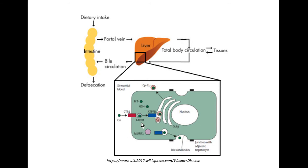Inside hepatocytes, copper binds ATOX1 protein that carries copper to the trans-Golgi network where copper binds ATP7B. If the amount of copper is normal, ATP7B incorporates copper into ceruloplasmin, which is then released into the plasma. If there is excess copper, ATP7B goes to the lysosome where it binds the MURR1 protein, then releases the excess copper in bile, which eventually releases copper in urine and feces.